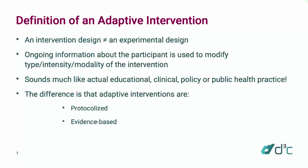An experimental design answers the question: how should we researchers systematically manipulate independent variables so we can answer scientific questions? A SMART is an experimental design — it has randomizations because the goal is to answer causal questions with minimal structural assumptions. We don't have randomizations in an adaptive intervention because it's not an experimental design; it's an intervention delivery framework.